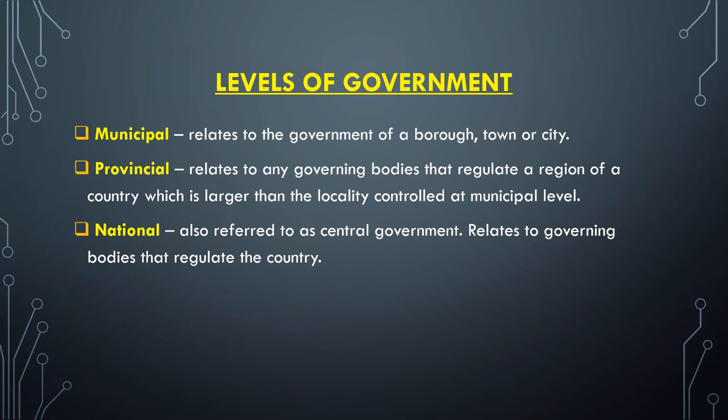At the national level, also called the central level, we have the parliament (the legislature), the executive, and the judiciary. The powers of government are distributed at these different levels. The question of whether a country is organized on a unitary or federal basis depends on how those powers are distributed.